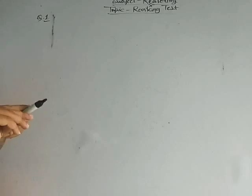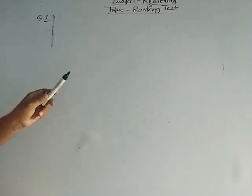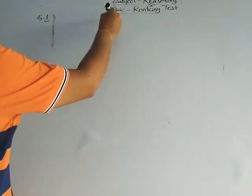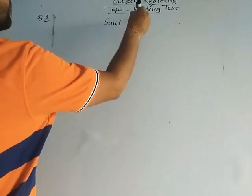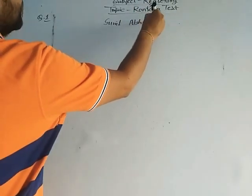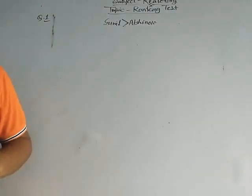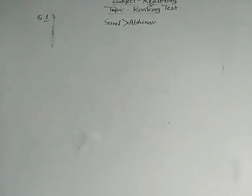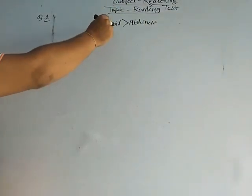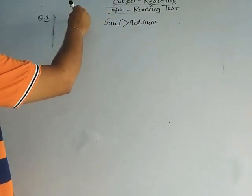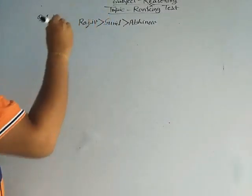First point: Sunil is heavier than Abhinav, so Sunil is placed above Abhinav. But Sunil is not as heavy as Rajiv, which means Rajiv is heavier than Sunil. So we have Rajiv heavier than Sunil, and Sunil heavier than Abhinav.